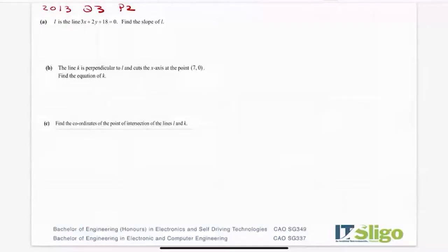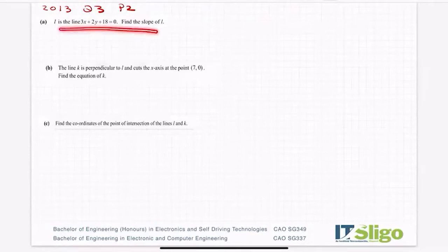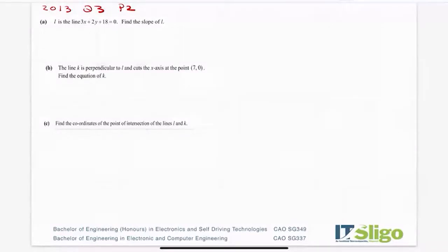Let's have a look at this one - the 2013 question on coordinate geometry. In my opinion, quite a difficult little question. There are no points given, so it looks at an equation and asks you for the slope, then looks at perpendicular lines and asks you to find an equation of a line, and then it's looking for points of intersection. So not the easiest question, well worth practicing.